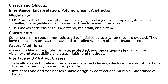Java allows you to define interfaces and abstract classes, which define a set of methods that implementing classes must provide. An interface is a set of methods that defines how a class is to be implemented. Interfaces and abstract classes enable design by contract and multiple inheritance of behavior. I'm not going to deep dive into interface and abstract classes now, but you will understand later when you see some programs. So now let's move to the next slide.